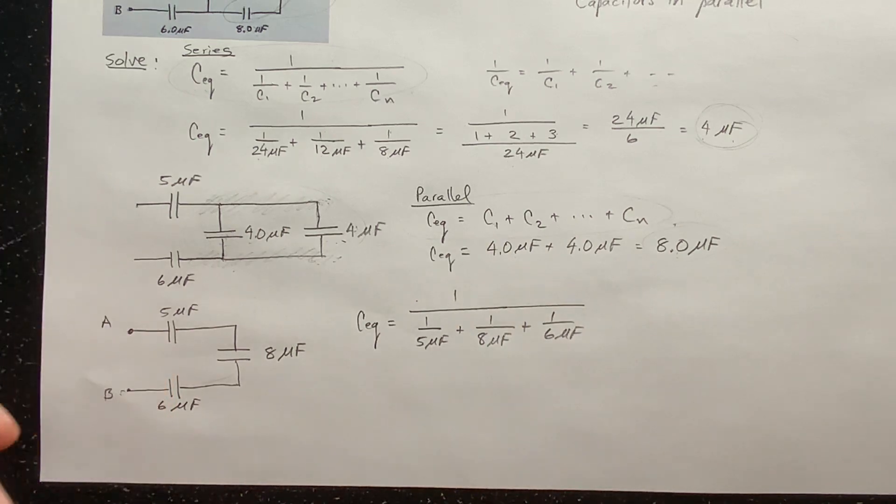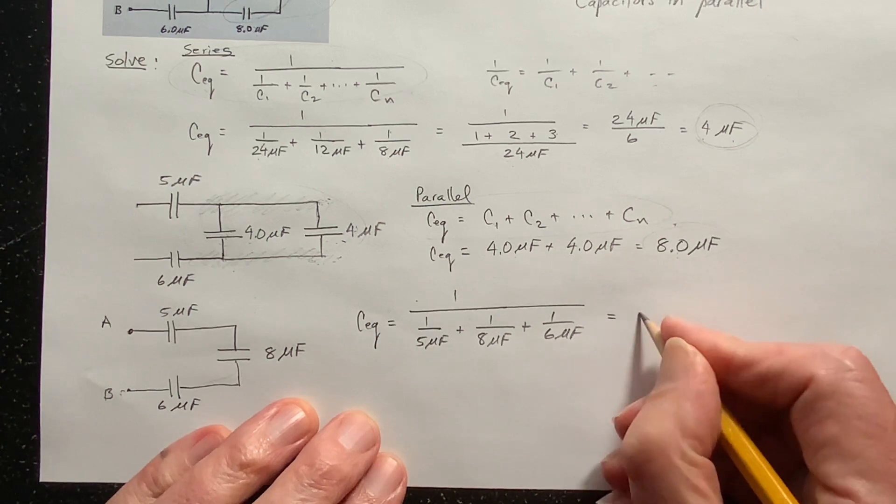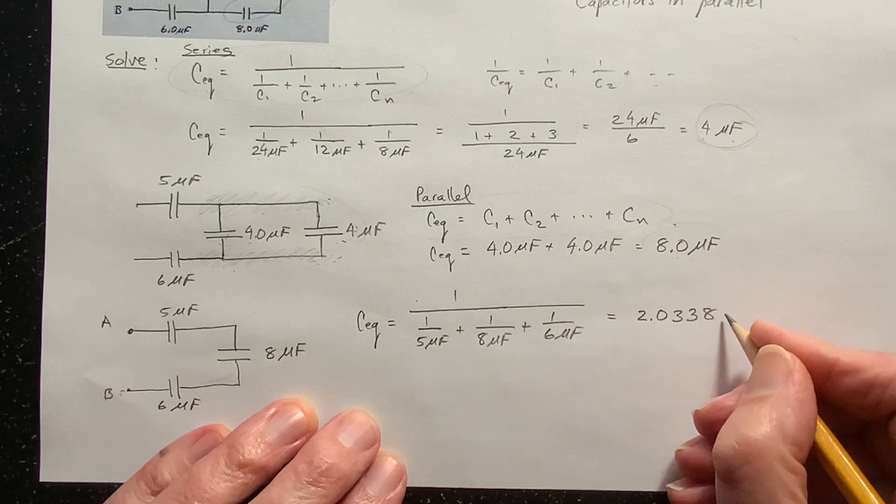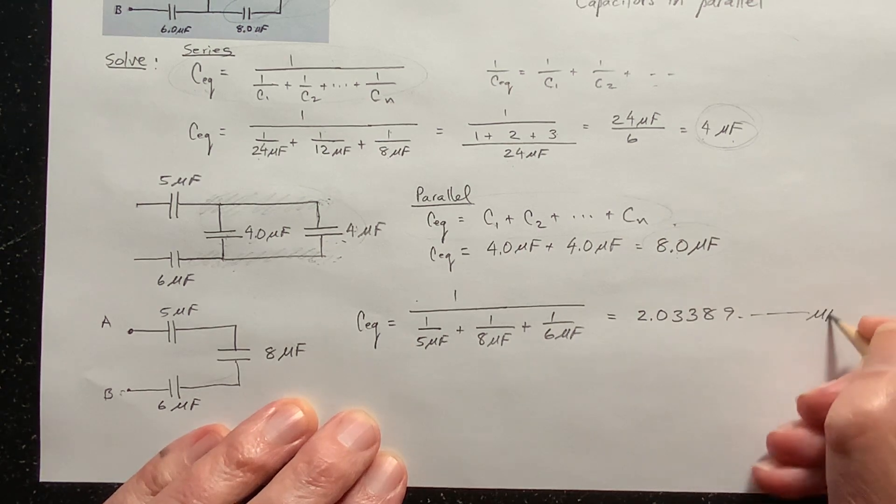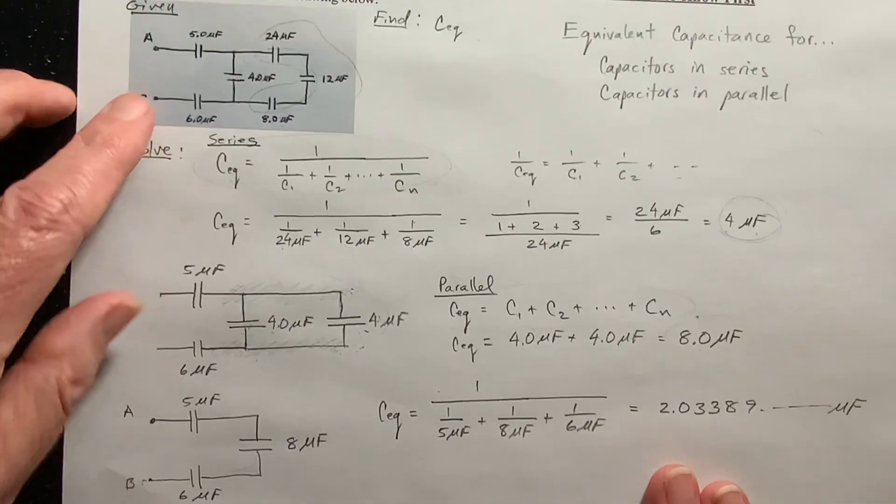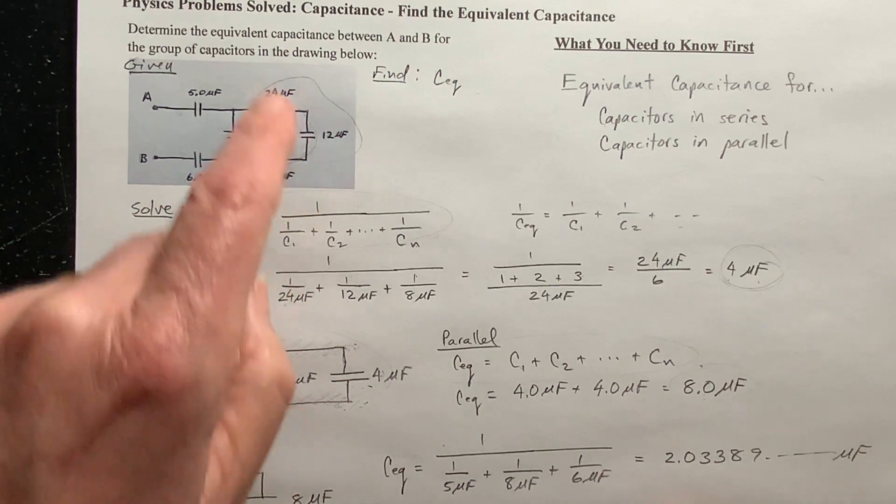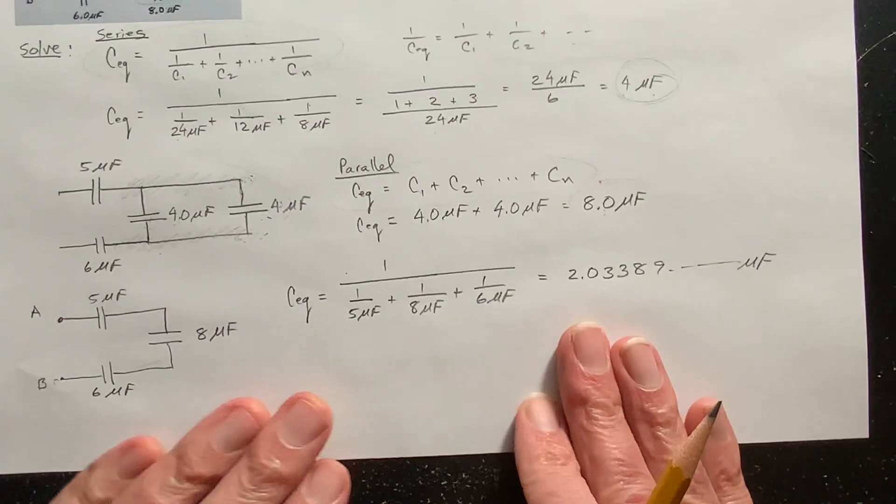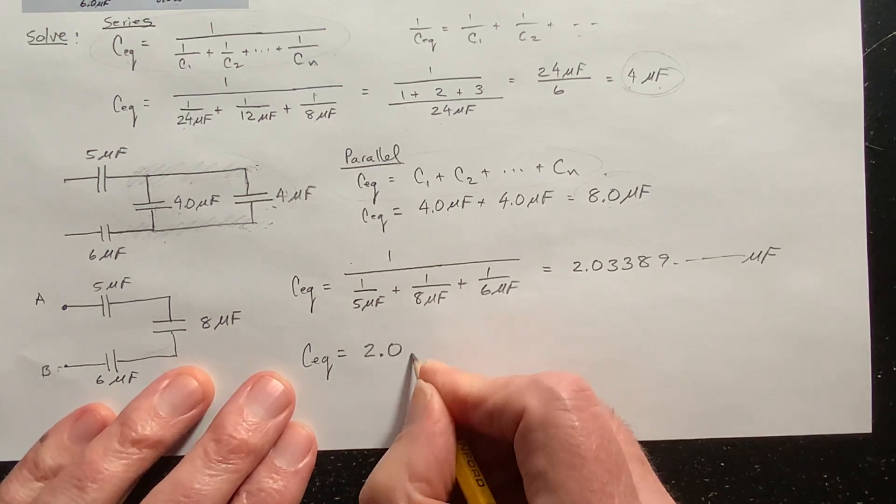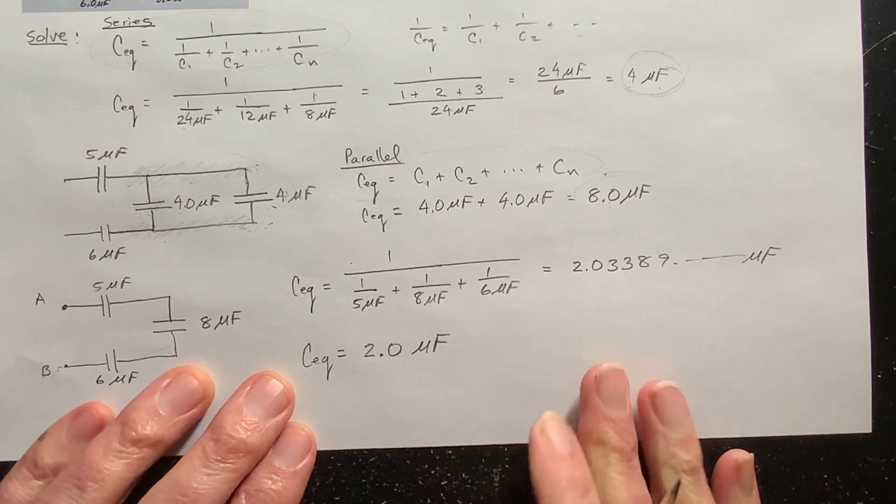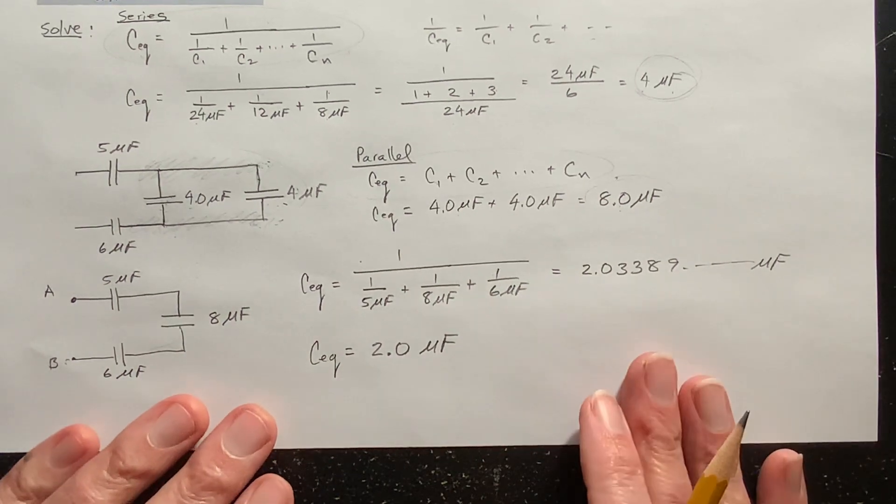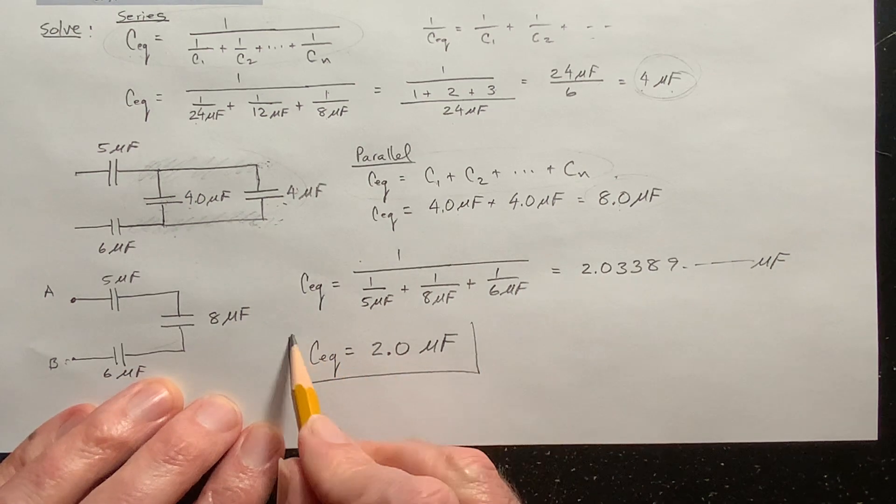And you get 2.0333389 blah, blah, blah, blah microfarads. Well, notice that in our, the problem that's given, everything has two significant figures. So we're going to round our answer off to two significant figures. That's 2.0 microfarads. If you want to leave it as 2.03, I'm not going to track you down, but there, and there we go. And that's how we do.